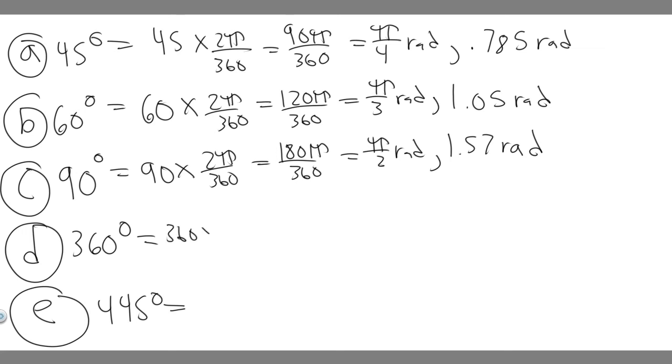360, 360 times 2π over 360. Notice that these just cancel. So you're just going to get 2π, so it's going to be 2π radians. And then do 2 times π. You're going to get 6.2831. I'm just going to round to 6.283 radians.